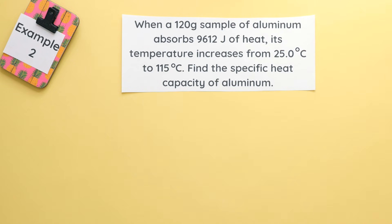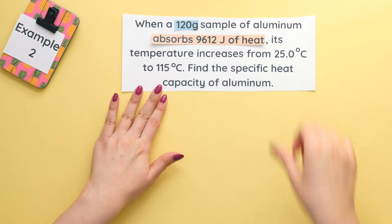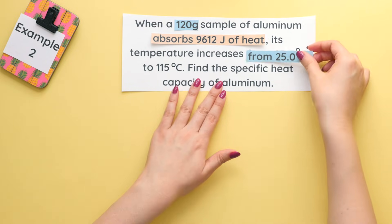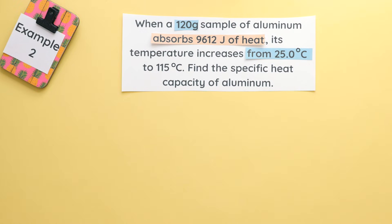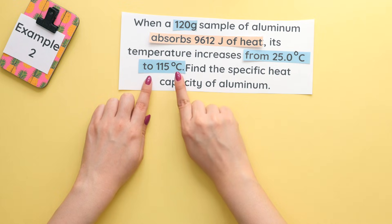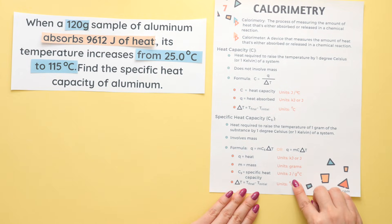Let's identify what we're given and what we're finding. We are given the mass, our heat which is positive since our key word here is absorbed, from 25 degrees Celsius means this is our initial temperature, to 115 degrees Celsius means this is our final temperature, and we are finding the specific heat capacity which has a unit of joules divided by grams Celsius.